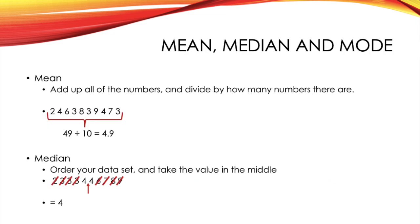Next, you've got your mean, median, and mode. To calculate the mean, all you need to do is add up all of your numbers and divide by how many numbers there are. So, for example, in this data set, if you were to add up all these numbers, you'd get 49. Because there are 10 numbers, you'd need to divide by 10, which gives us a mean of 4.9.